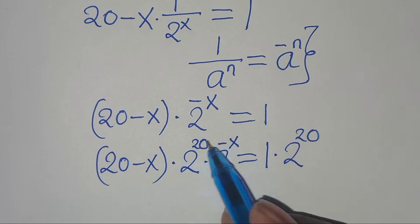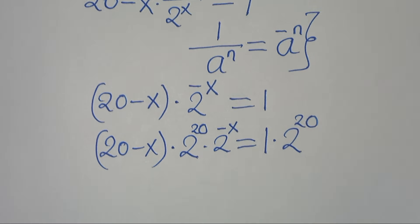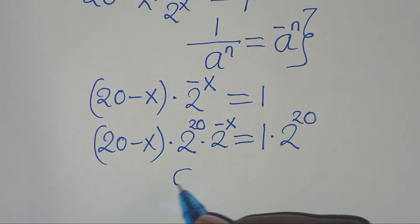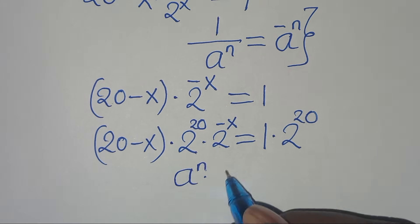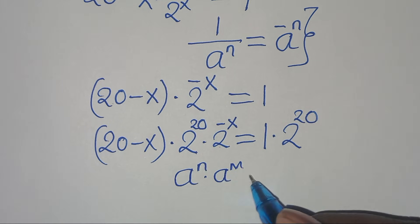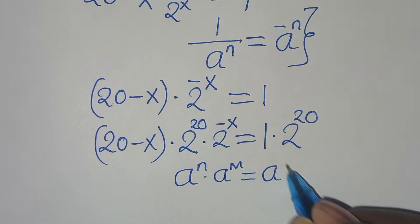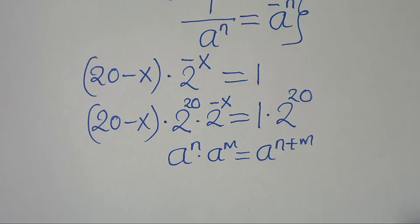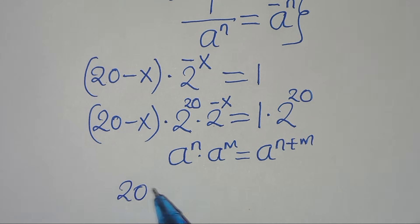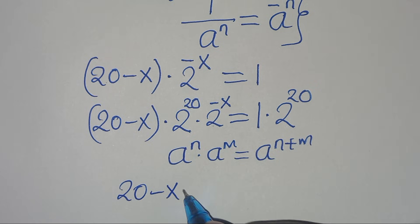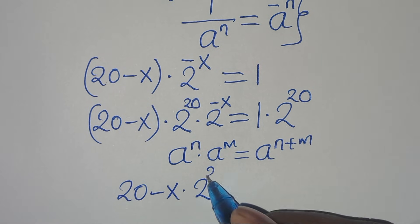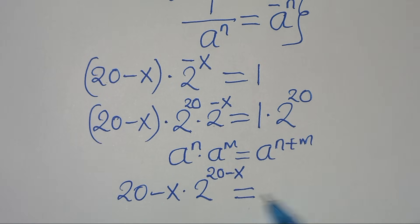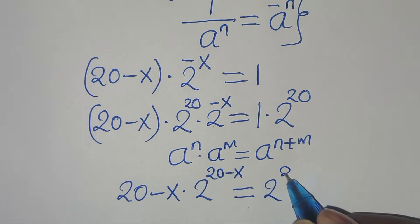We multiply 2 to the power of 20 times 2 to the power of minus x. This is in the form a to the power of n times a to the power of m, which equals a to the power of n plus m. So we get (20 minus x) multiplied by 2 to the power of (20 minus x), equals 2 to the power of 20.